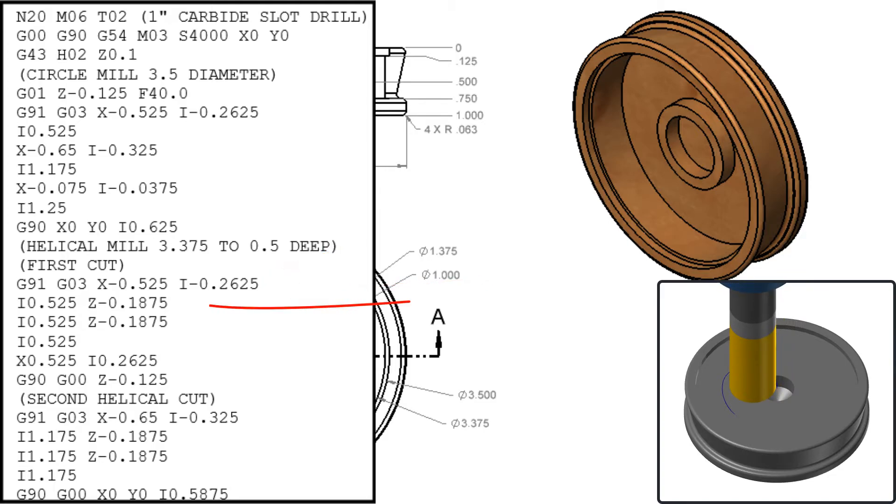Next, I'll take the first helical cut by telling the machine to incrementally cut a full circle, and while cutting this circle, step the Z axis down 3 sixteenths of an inch. This line of code will then be repeated so the cutter will be at the final depth of negative 0.5.